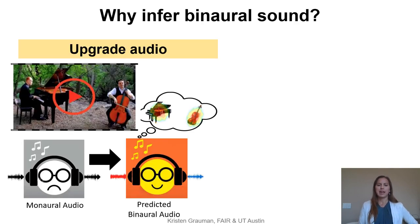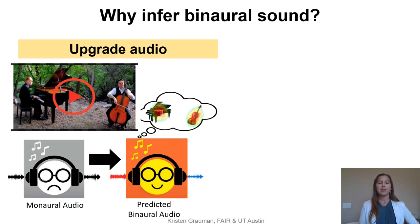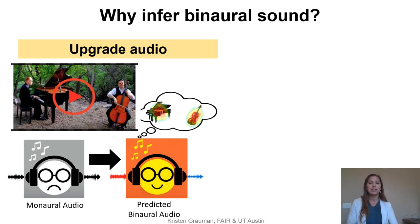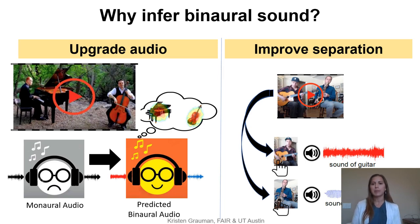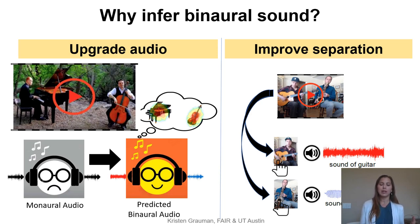So why do we want to infer binaural sound? There are two motivations. One is simply to upgrade the audio experience — a listener of some video can, with properly predicted binaural audio, feel immersed in the scene, hearing things come from the directions they would come. But we're also interested in two-and-a-half-D visual sound to improve audio source separation, because the embeddings we learn will be forced to zoom in on the link between where sounds are coming from and which objects are sounding.